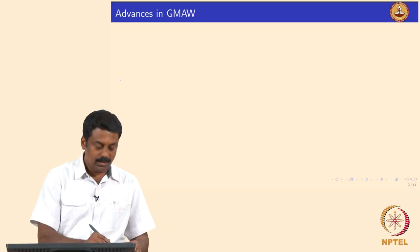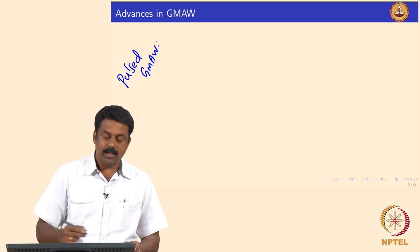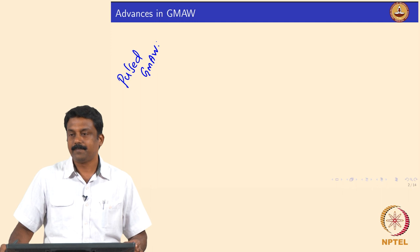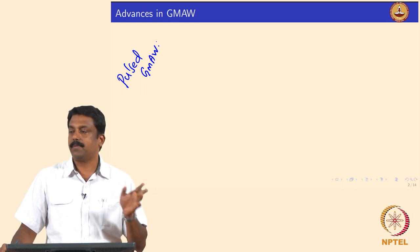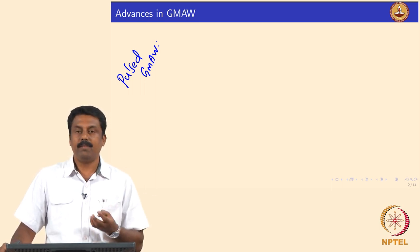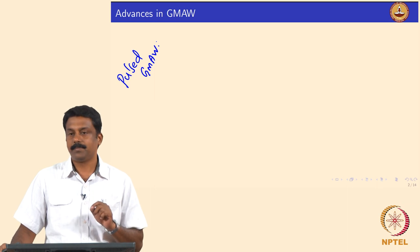We stopped the last class at the slide showing advancements in GMAW. In this class we will look elaborately at some of the advances made to make the process much more stable. One such advancement is pulse GMAW. I already indicated the use of current pulsing in metal transfer characteristics. When we look at metal transfer behaviour as a function of current, our objective to achieve stable process characteristics is to achieve drop spray transfer.